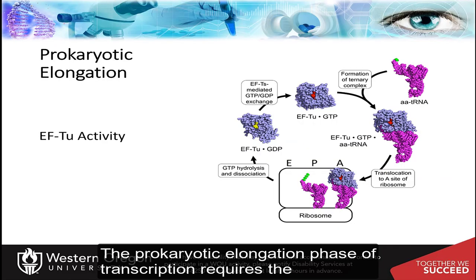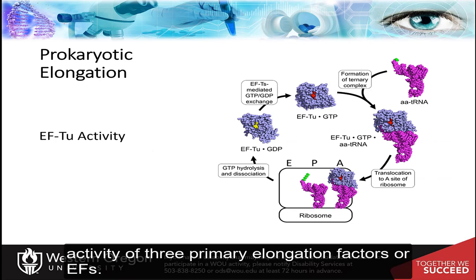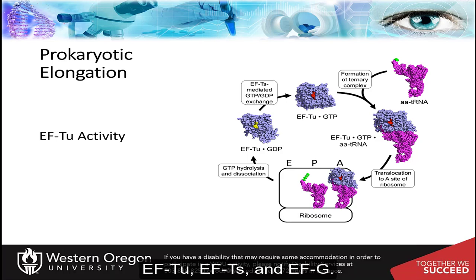The prokaryotic elongation phase of translation requires the activity of three primary elongation factors, or EFs: EF2, EFTS, and EFG.